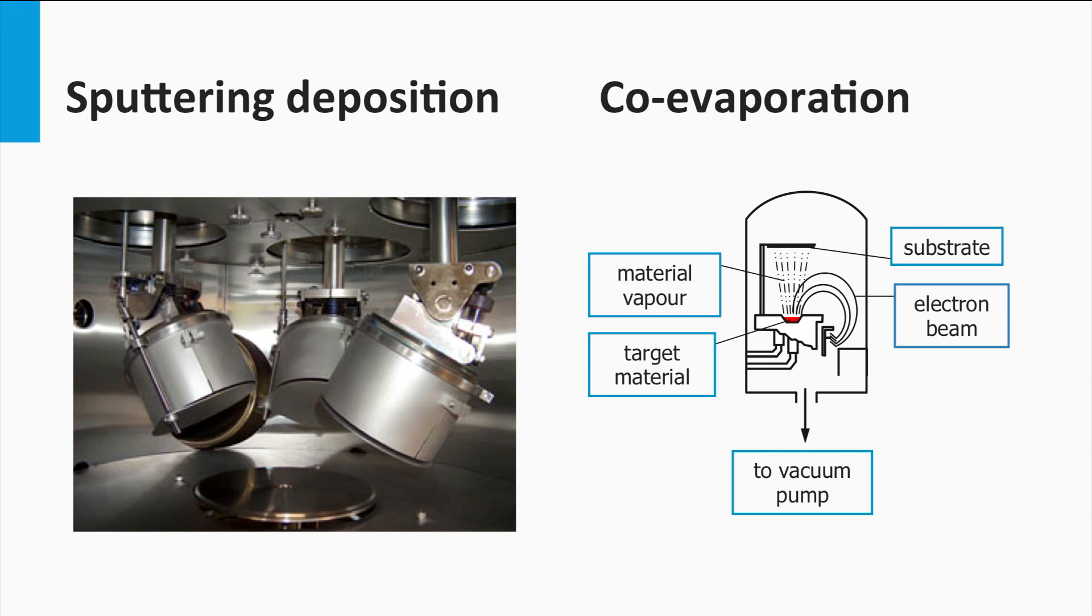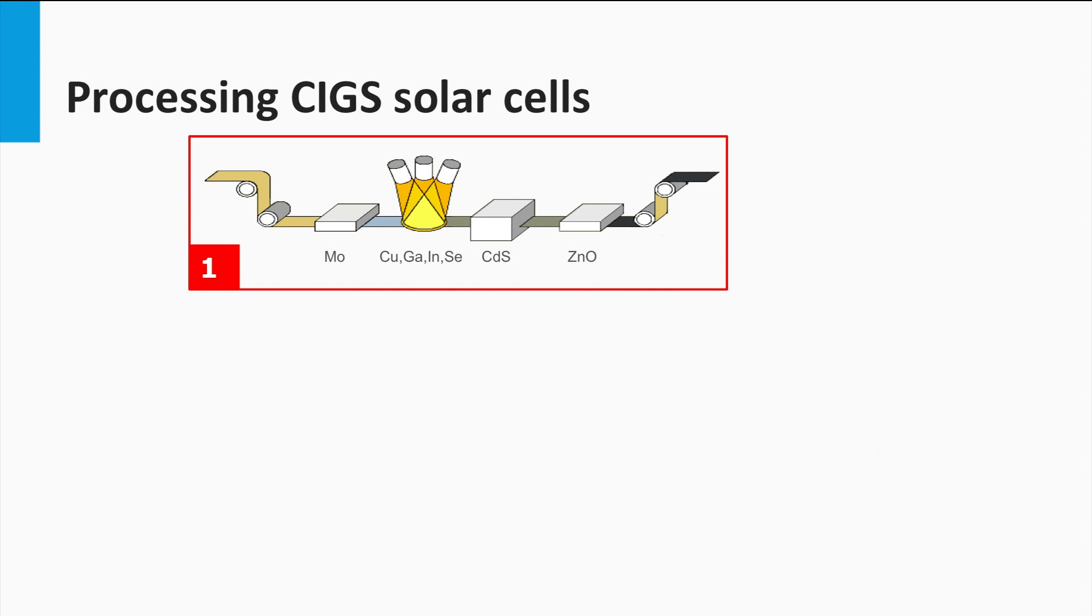The second approach is sputtering and co-evaporation on a substrate at room temperature. The deposited films on the cold substrate are thermally annealed in presence of a selenide vapor to form the final CIGS structure.